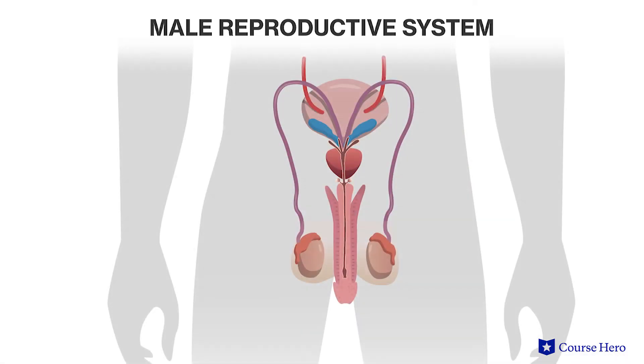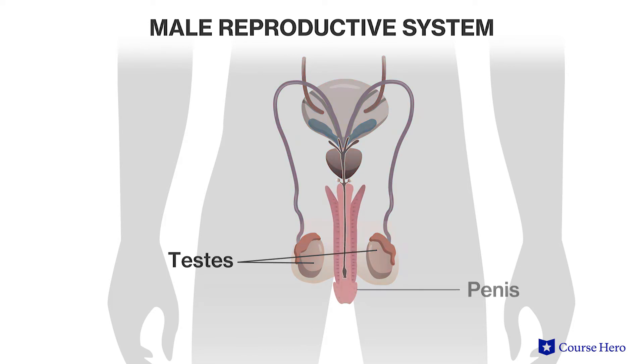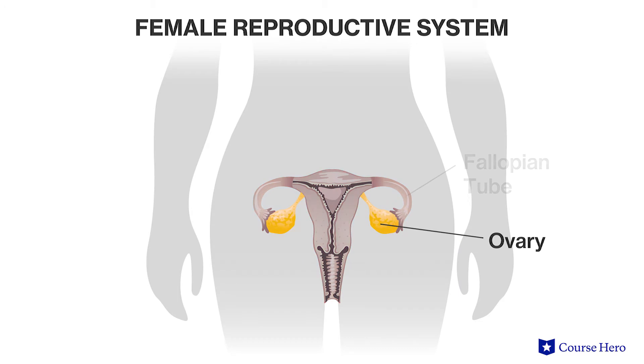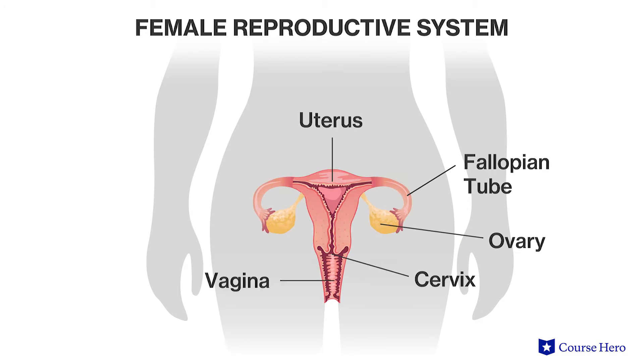The reproductive system consists of structures involved in the formation of offspring. In mammals, these structures include the testes, penis, and associated glands in a male, and the ovary, fallopian tubes, uterus, breasts, and associated glands in a female.